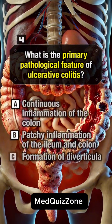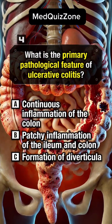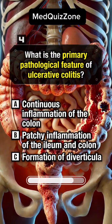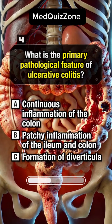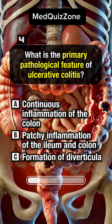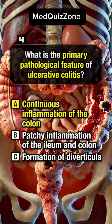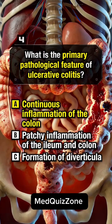What is the primary pathological feature of ulcerative colitis? Answer A: Continuous inflammation of the colon.